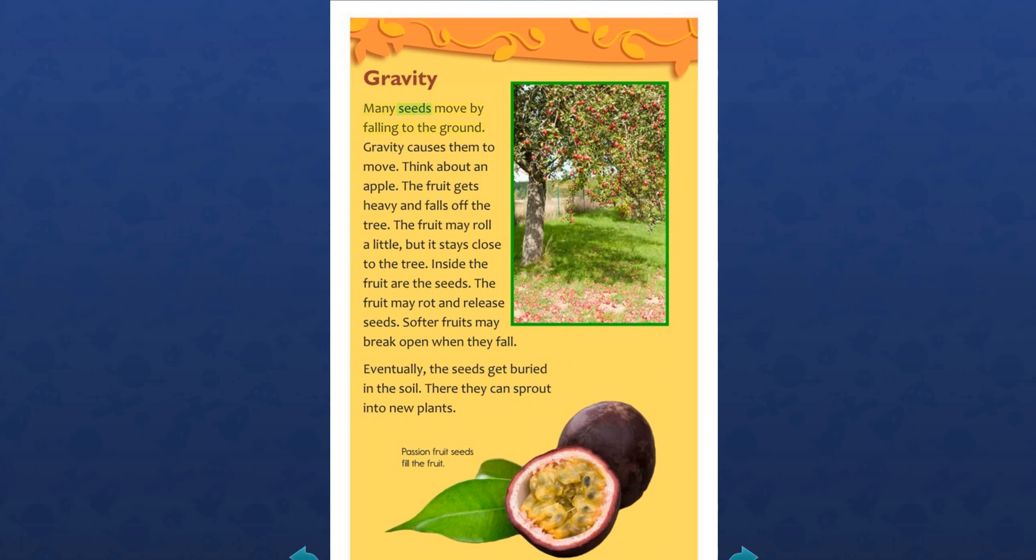Gravity: Many seeds move by falling to the ground. Gravity causes them to move. Think about an apple. The fruit gets heavy and falls off the tree. The fruit may roll a little, but it stays close to the tree. Inside the fruit are the seeds. The fruit may rot and release seeds. Softer fruits may break open when they fall. Eventually, the seeds get buried in the soil. There they can sprout into new plants.